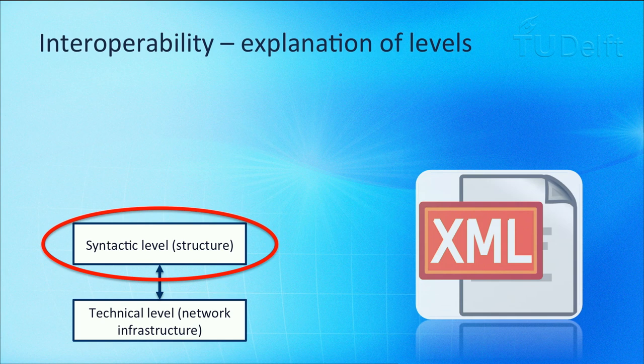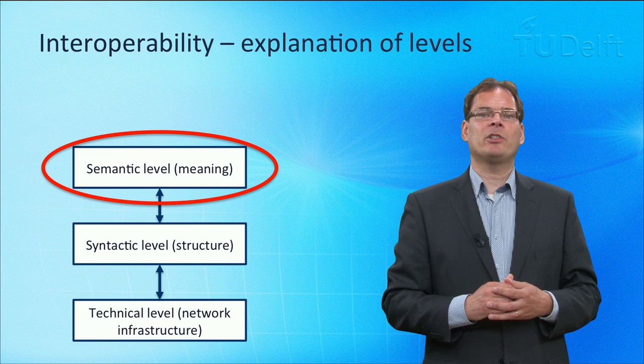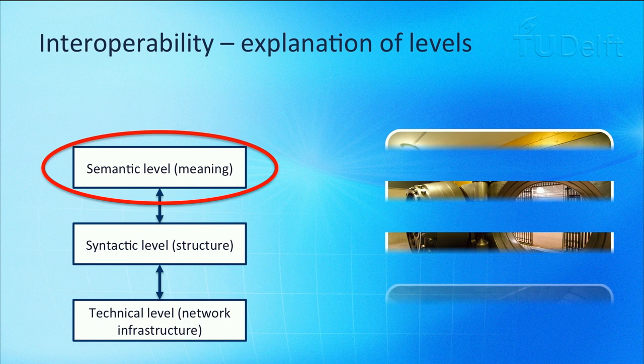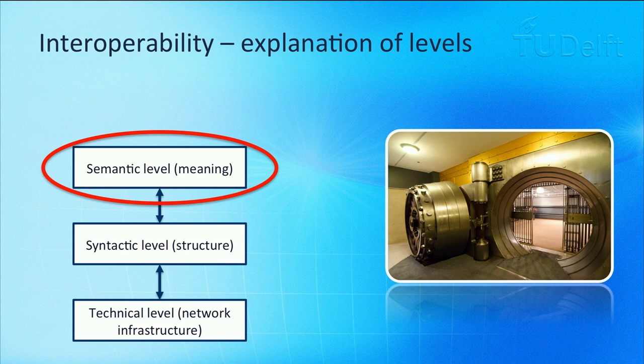The third layer is the semantic layer, which ensures that the communicating systems interpret information in the same way. Semantics provide meaning and are necessary to define what data denotes. For example, 'bank' can refer to a riverbank, a bank of clouds, or an organization handling financial transactions. 'Raining cats and dogs' should not be interpreted as cats and dogs falling from the sky, but as heavy rain.